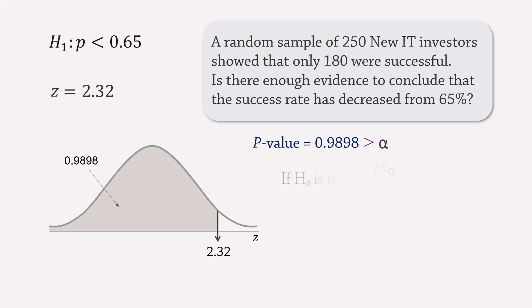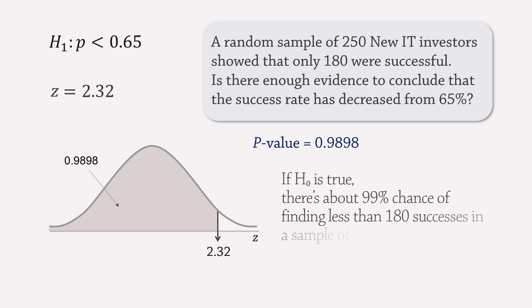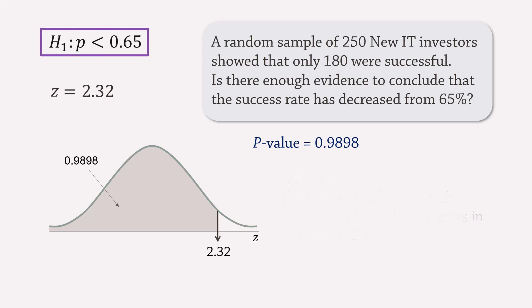It means that if the null hypothesis is true — that is, the success rate is indeed 65% — then there is about a 99% chance that we will find less than 180 successes in a sample of 250 investors. Note, however, that a typical left-tailed test results more often in a negative test statistic; otherwise, a hypothesis test may not be necessary.